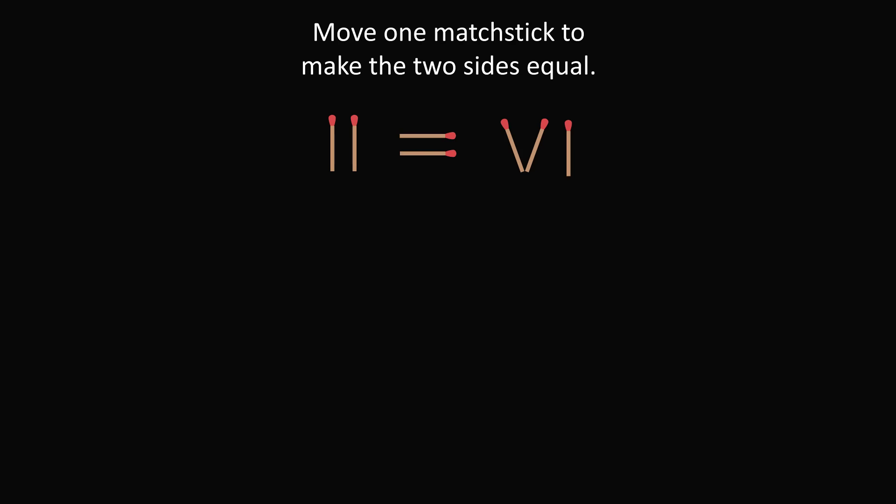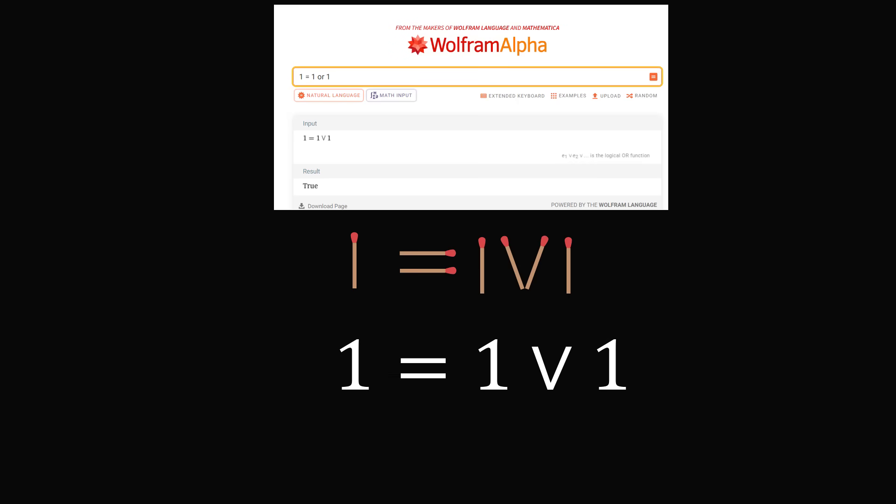But, there's one more clever way to solve the problem. So, take any of the first two matchsticks. And, I'm going to give credit to Pentax 33 for finding this wonderful solution. Move either of these matchsticks over. So, we have 1 is equal to 1 V 1. So, why is this equation true? Well, this equation will be 1 is equal to 1 OR 1 in logical terms. And, this is, of course, a true statement. And, here is a Wolfram Alpha evaluation just to show you how it's true. 1 is equal to 1 OR 1 as the logical OR function. And, this is true. This does make both sides equal to each other.